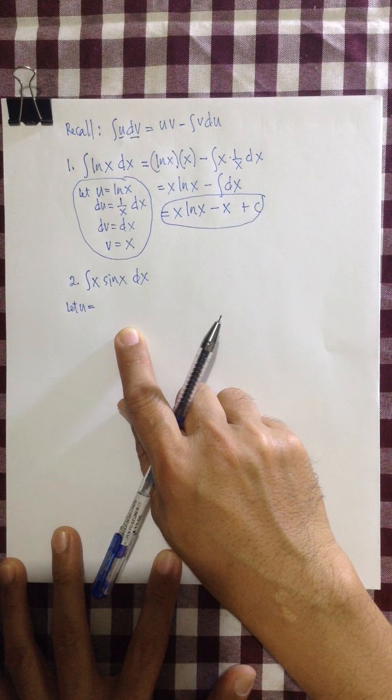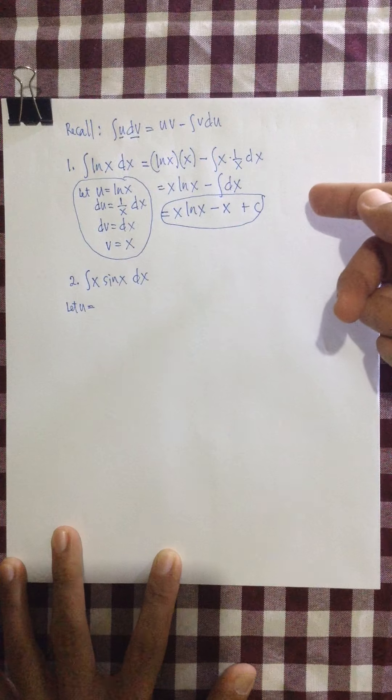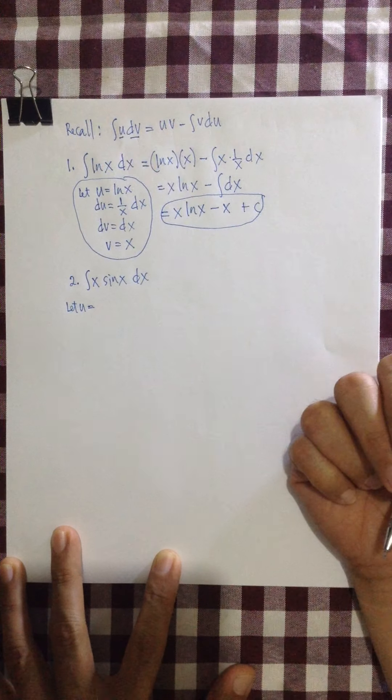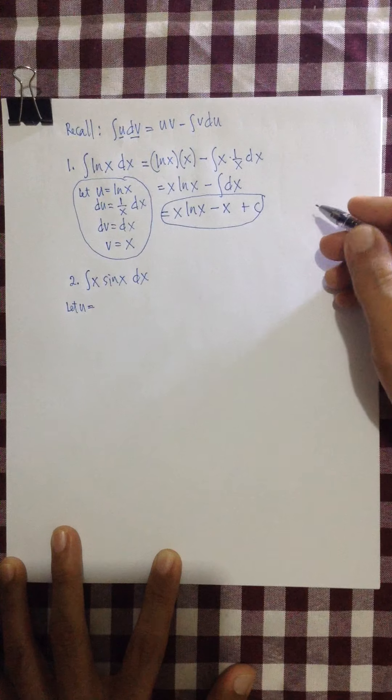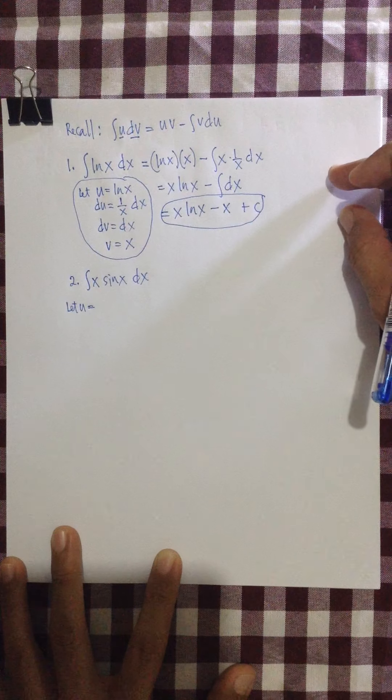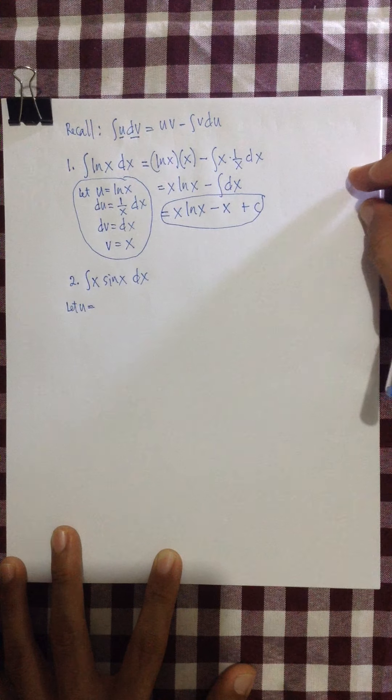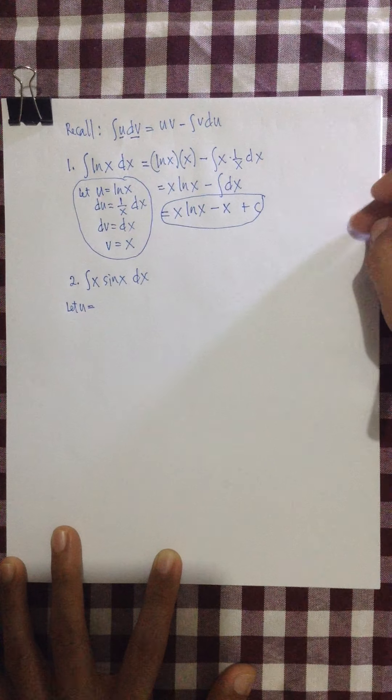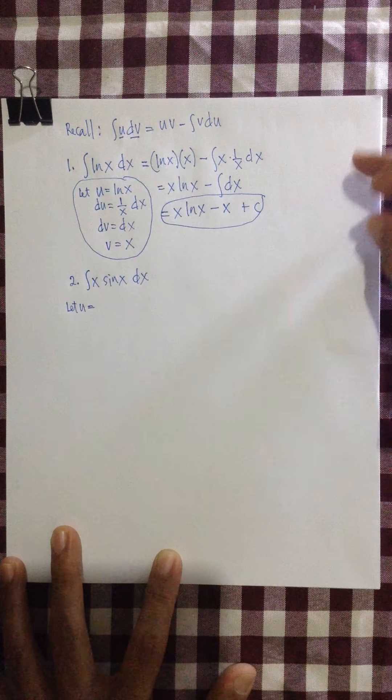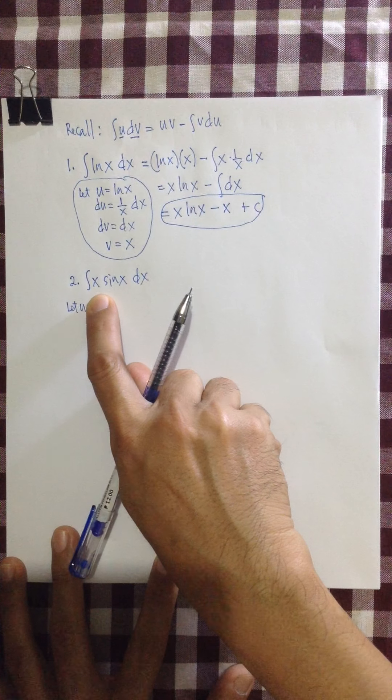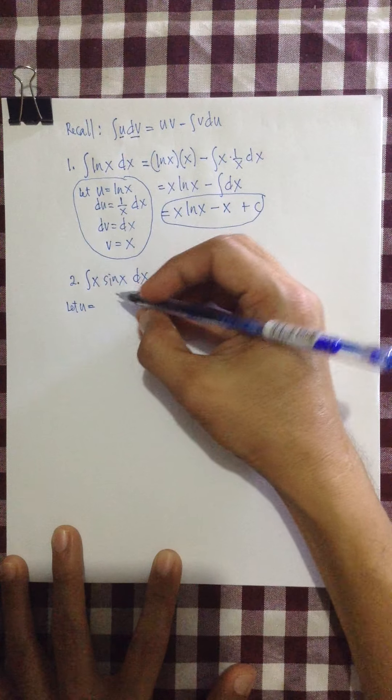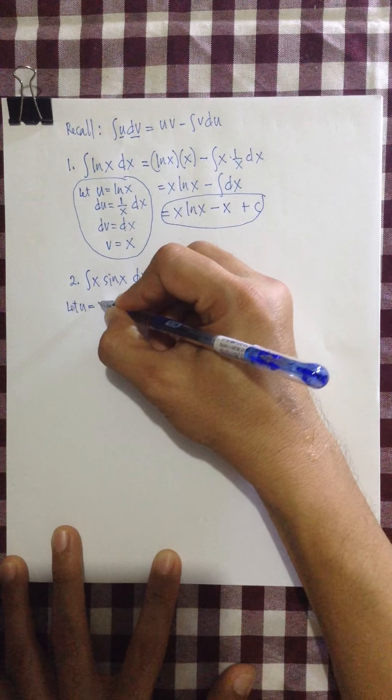Which says that she has what we call an acronym of those letters telling you which one should first be taken as your u. Remember, we have the logarithm, then the rest. But there's also what you call algebraic function. And the trigonometric is actually placed after the algebraic. So that means that here, x is algebraic, and sine x is trigonometric. So that means that the most logical choice for our u is x.